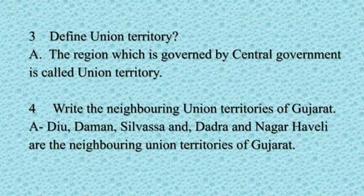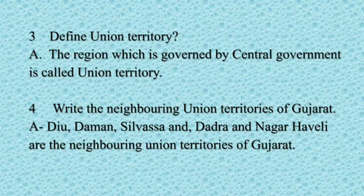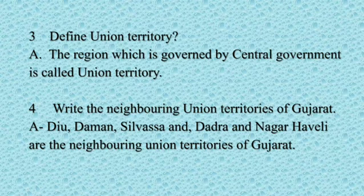No. 3: Define Union Territory. The region which is governed by the central government is called a Union Territory. No. 4: Write the neighbouring union territories of Gujarat. Diu, Daman, Silvassa and Dadra and Nagar Haveli are the neighboring union territories of Gujarat.